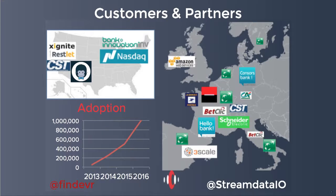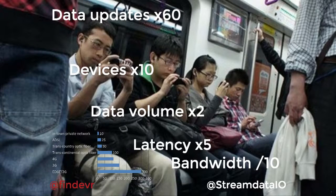In terms of customers and partners, we started in Europe and we're expanding in the US right now with partners in the API space. In terms of adoption, we should reach one million monthly devices this year.